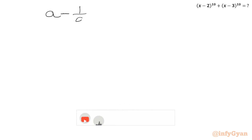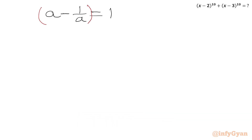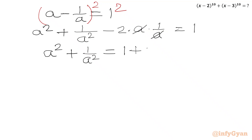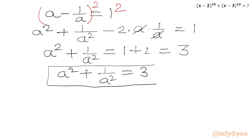Let us calculate. Starting with A - 1/A = 1, squaring both sides using the (A - B)² formula: A² + 1/A² - 2·A·(1/A) = 1. Since A·(1/A) = 1, we get A² + 1/A² = 1 + 2 = 3. We will call this equation number 1.